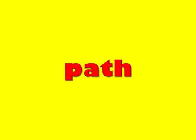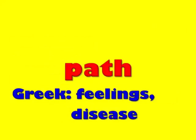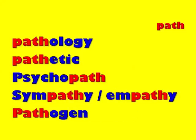The next word on our list is "path." Try to think of some words that contain the root word path. Here you'll find a list of some words that contain the root word path. Path is a root word that comes to us from Greek. It means feelings or disease. Knowing this helps us understand and decode any of the words on this list and any words you may have written down that contain the root word path.